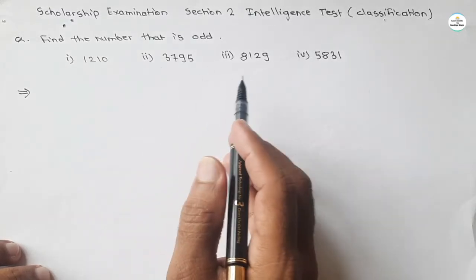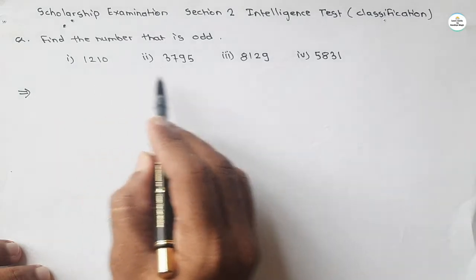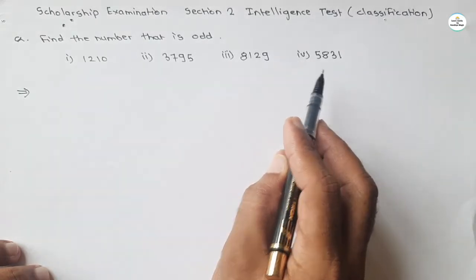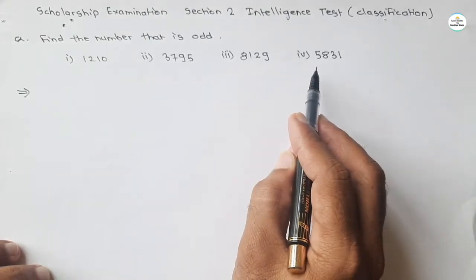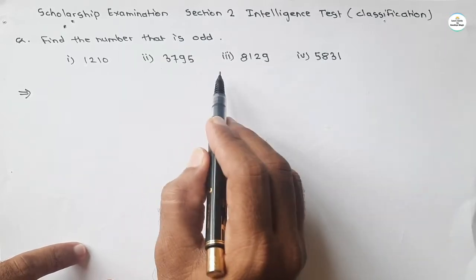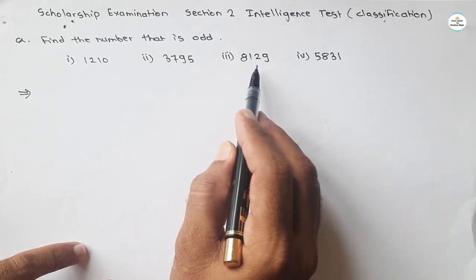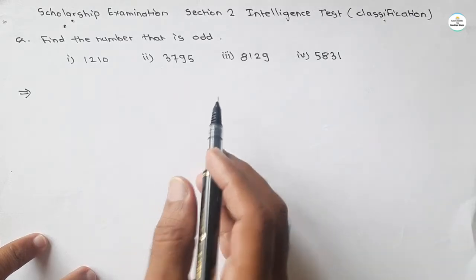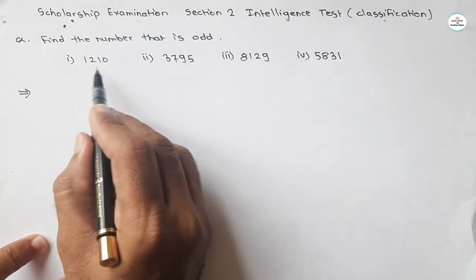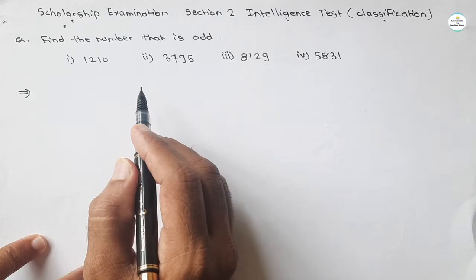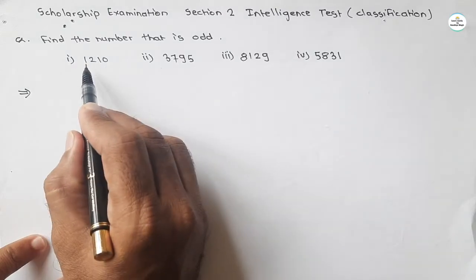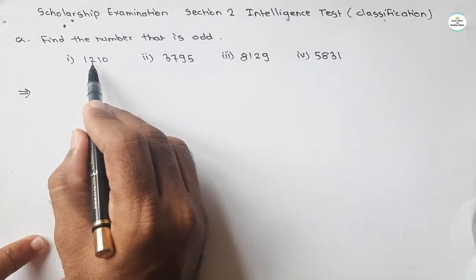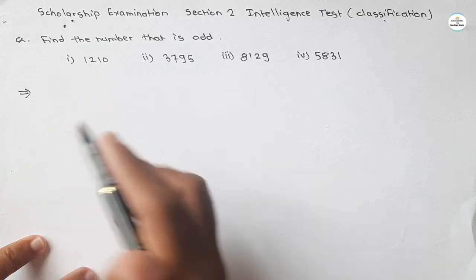So just try one by one, whether these are prime numbers. No, these are not prime numbers. So is there any relation with the square numbers? We can just judge. Now see, in this, take the sum of all digits. Just try. Sum will be 1 plus 2, 3, 3 plus 1. Here sum will be 4.